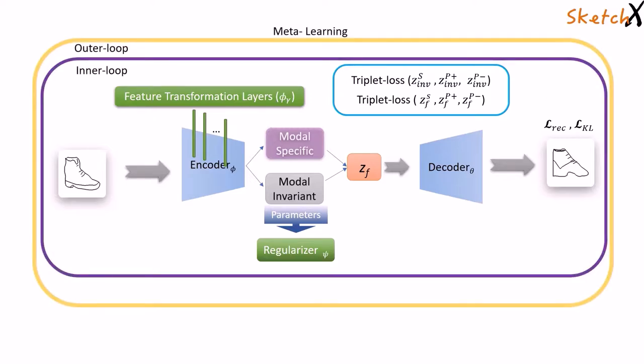In meta-learning, a model is trained in two loops. In the inner loop, the model uses the FT layers and the loss signal from the regularizer to adapt itself with meta-training loss to perform inner loop update on the meta-train dataset.